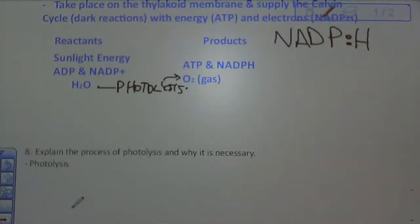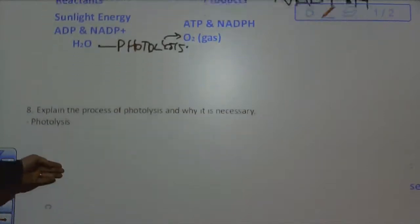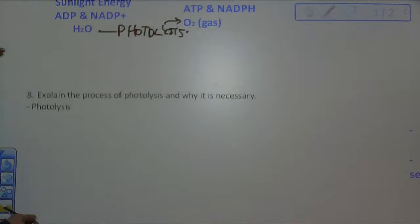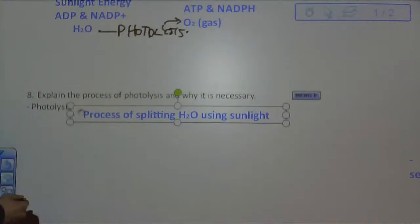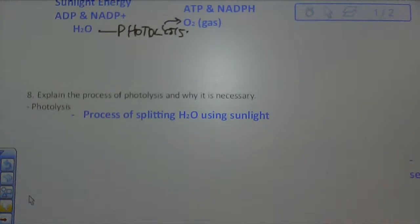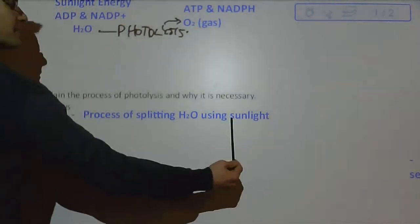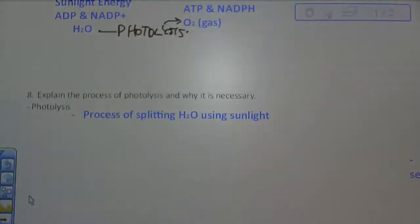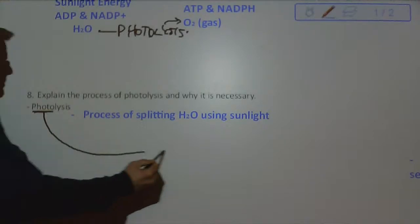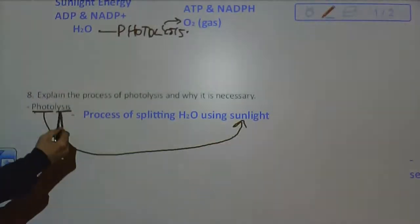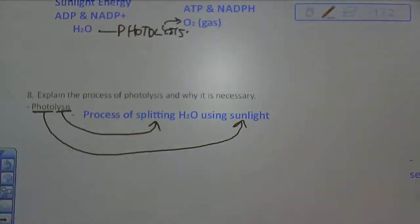And that's what we're going to talk about in number eight. Explain the process of photolysis and why it is necessary. So what is photolysis? Let's start there. It's exactly what it sounds like if you know the parts of the word. Photo standing for light. Lysis meaning to break. So we are using sunlight to break up water into oxygen gas. You probably want to be able to relate the parts of the word to what it actually means.